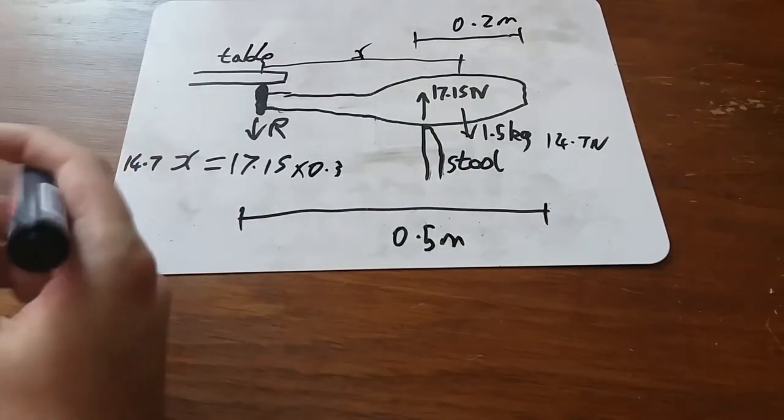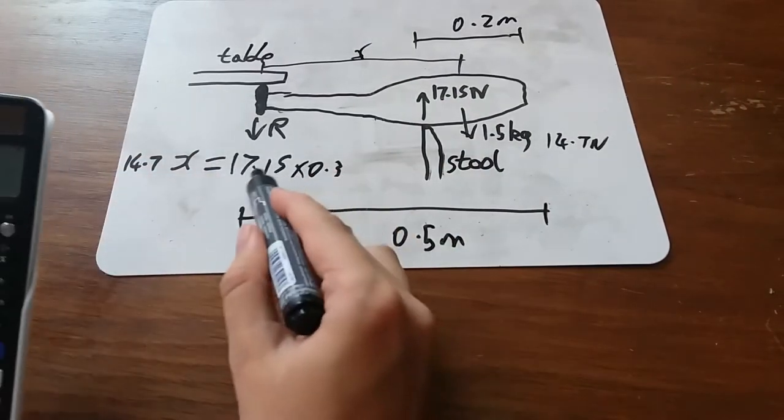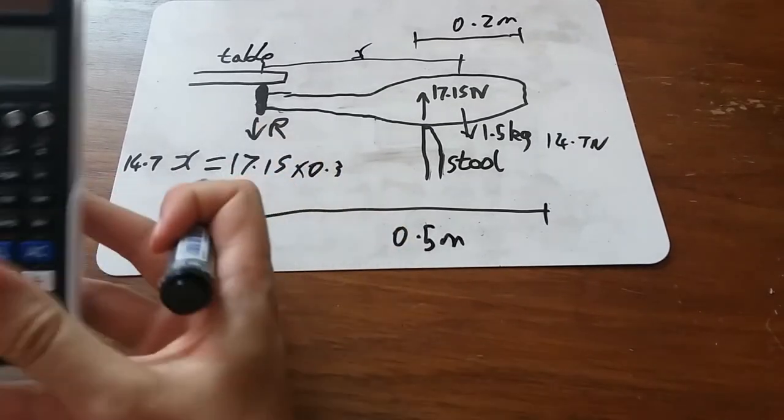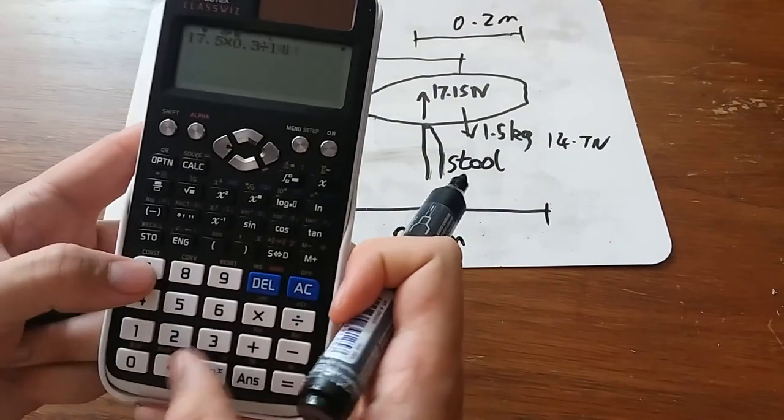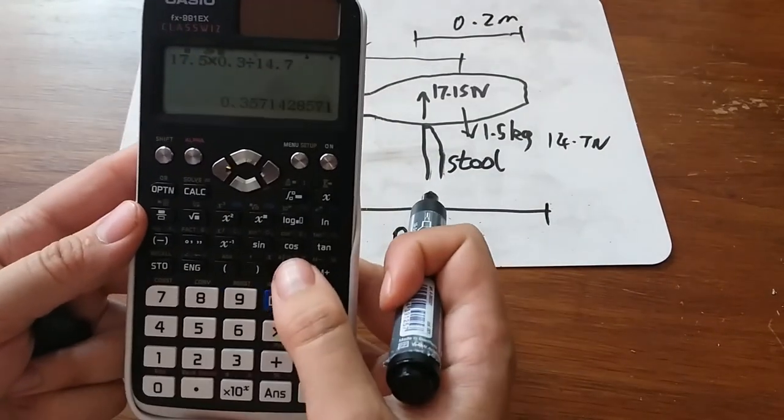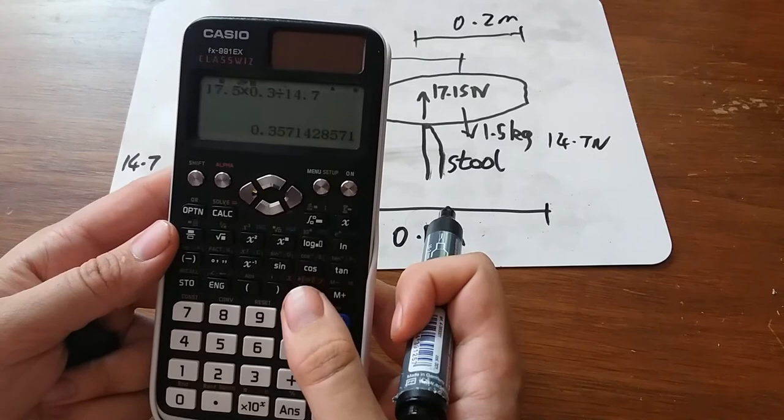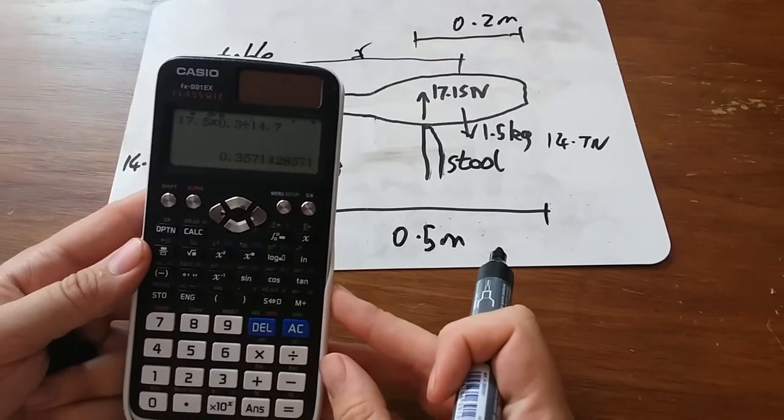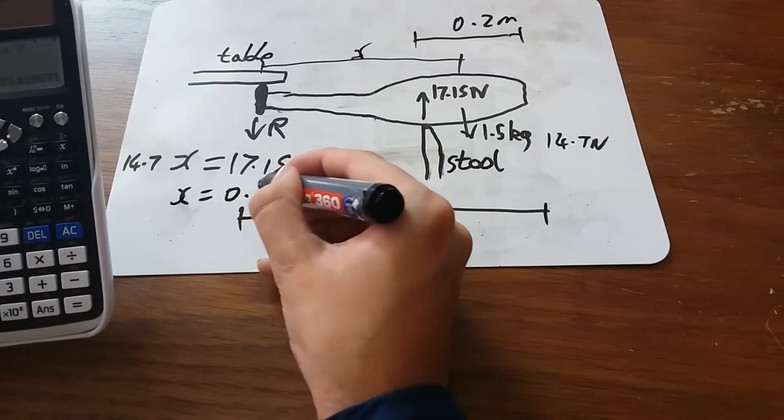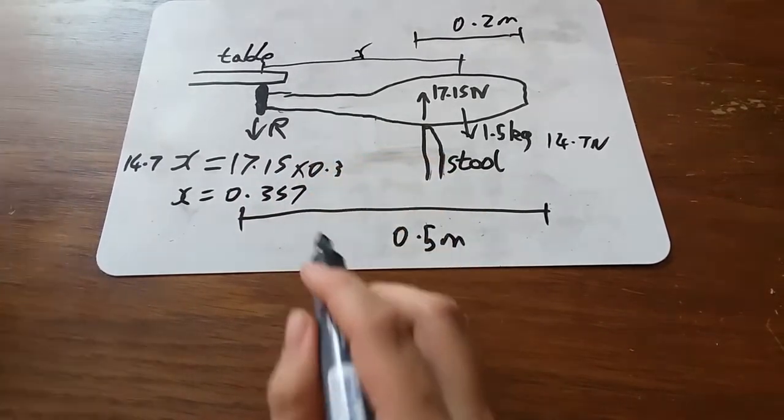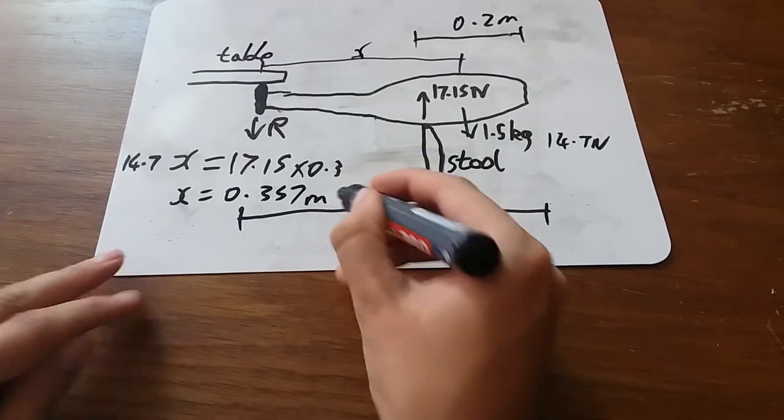Doing some rearranging, well, we could do that times that, but divided by the 14.7. So 17.5 times 0.3 divided by 14.7. And it's come out as that number there. So about X equals 0.357. I'm just going to round it. And that there is in meters.